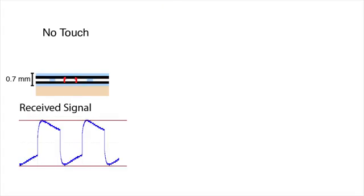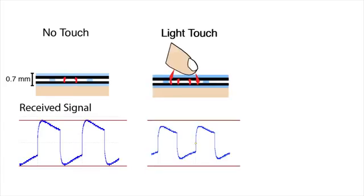A square signal is transmitted by the lower electrode and received in the top electrode. Bringing a finger close to an electrode reduces the mutual capacitance. This decreases the amplitude of the received signal.